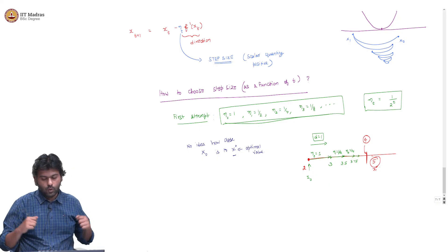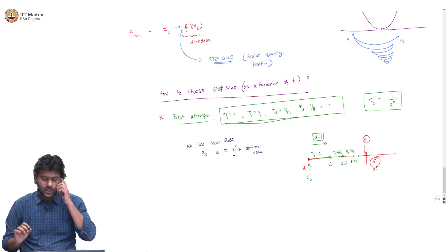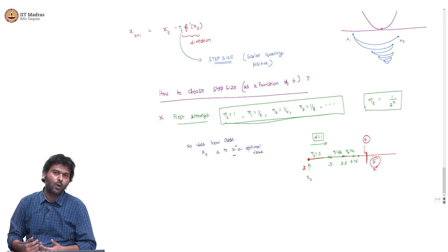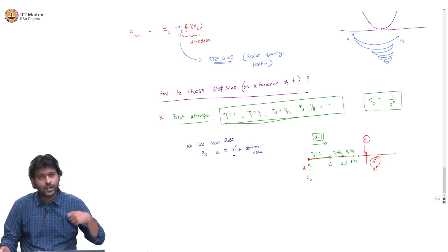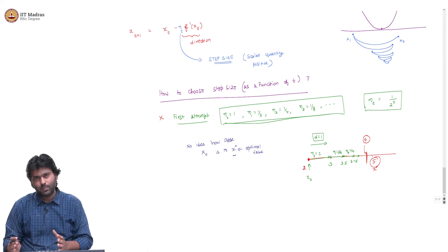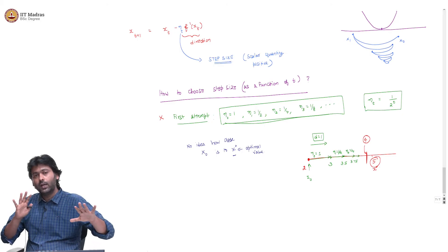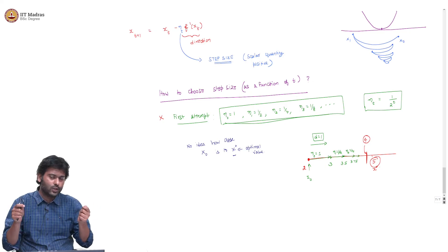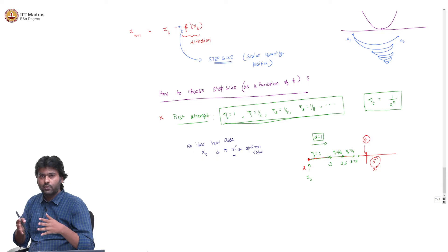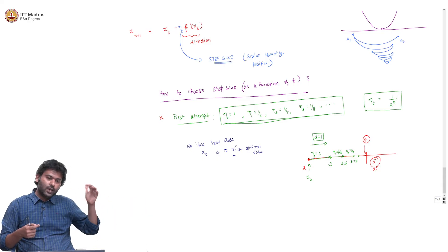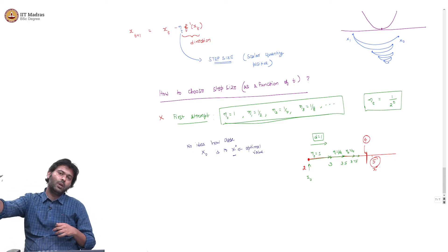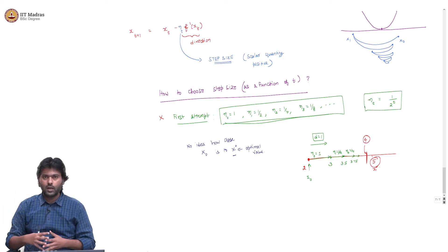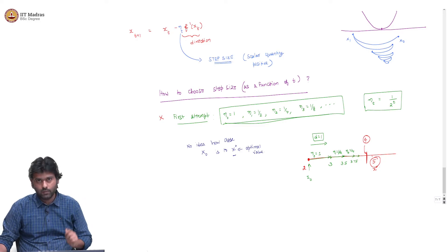This first attempt is a failure. So the question is: if this sequence of step sizes is not good, what else should we do? There are two conflicting objectives. One is to reduce your step size as iterations increase, otherwise it might lead to oscillations. The other is that you should not reduce it too much, so that you will not be able to reach your minimum, no matter how far your minimum is from where you started. Is there such a step size at all?